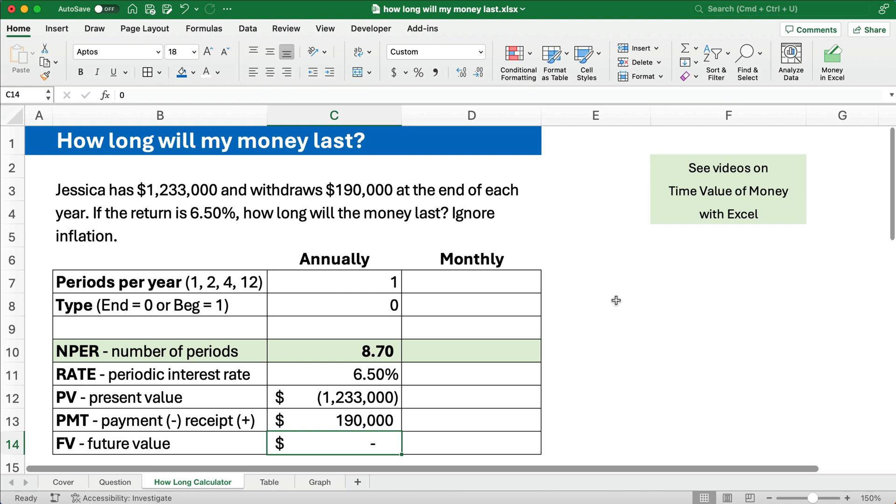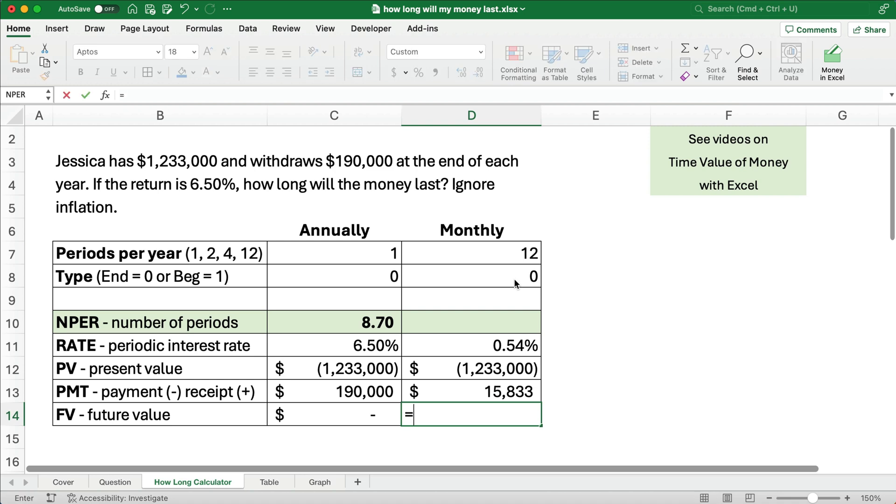So let's do monthly. It's the same kind of calculation. Monthly would be 12 months. Payments happen at the end of each month. And so instead of saying $190,000, let's take $190,000 divided by 12. And so we'll say, how much is that per month? $15,833 each month. We're still going to do a periodic rate. Six and a half percent for the year is going to be six and a half percent divided by 12. So how much is that per month is like a half percent per month? The present value is still going to be $1,233,000.